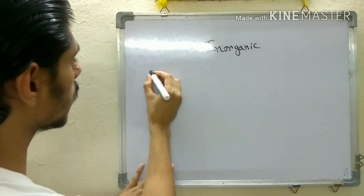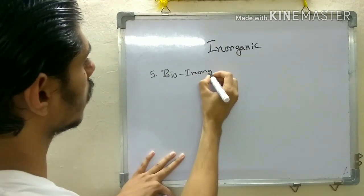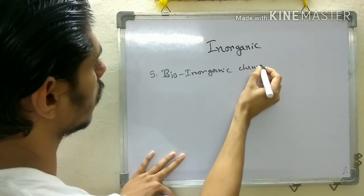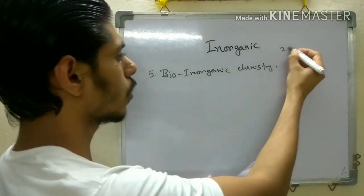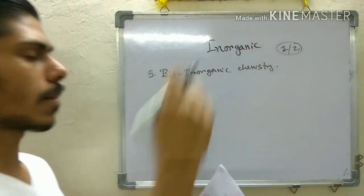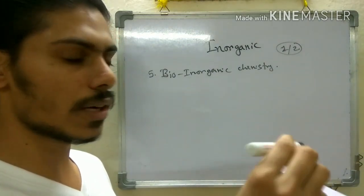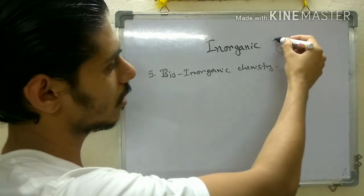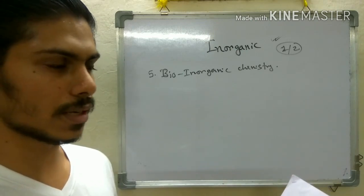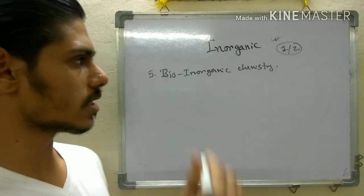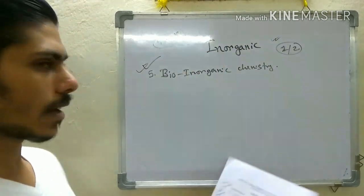The fifth topic is bio-inorganic chemistry, which is another most important topic because one or two questions always come from it. If you read just the bio-inorganic chemistry chapter in the Huheey book, you can easily answer these questions. I will also make a video on all the topics of bio-inorganic chemistry. By reading just a few things you can easily get four to eight marks, so it is a mastery topic and a very scoring topic.